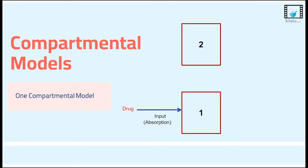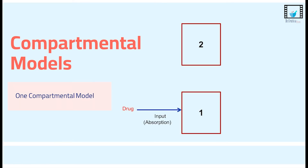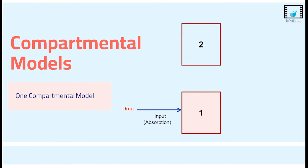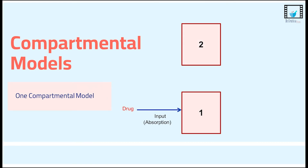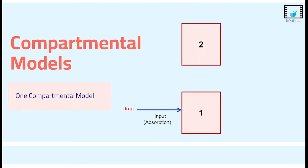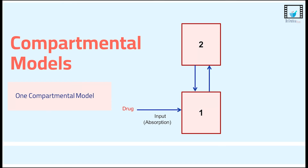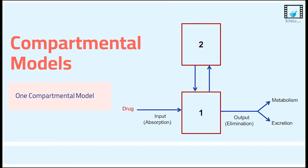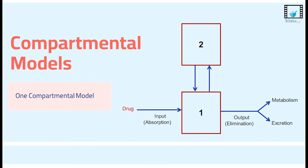In the two compartment model, after administration the drug distributes into two compartments: a central one into which the drug rapidly distributes, and a peripheral one containing the less perfused organs into which the drug does not distribute instantly. Drug moves back and forth between these compartments to maintain equilibrium. However, elimination only occurs from the central compartment.